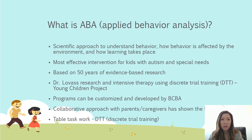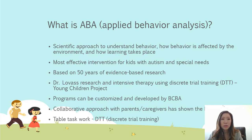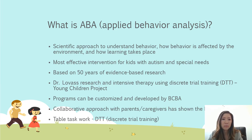So what is ABA? ABA is a scientific approach to understand behavior — how behavior is affected by the environment and how learning takes place. It is the most effective intervention, with 50 years of research showing it increases skills and decreases behavior with kids who have ASD. Dr. Lovaas's famous research through the Young Autism Project at UCLA used ABA strategy and developed the term DTT, which stands for Discrete Trial Training. This teaching style is found to greatly increase skills and help teach new skills while reducing many behaviors.